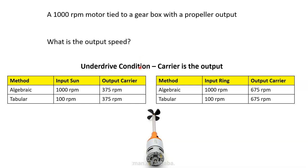Both of our methods confirm these are underdrive conditions, so long as your carrier is your output. The outputs are 375 RPM and 625 RPM respectively. Both methods work and are viable. It really comes down to which one works for you. If you use the tabular method, you've got three equations to concern yourself with. If you use the algebraic method, you've got about six equations depending on the condition. You can always look at both to verify you get the same answer.